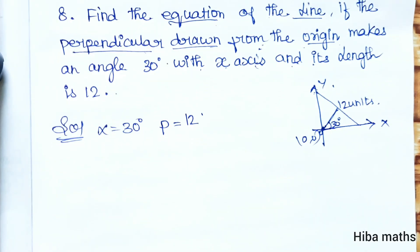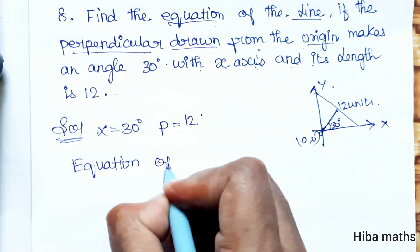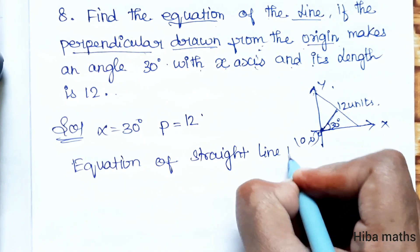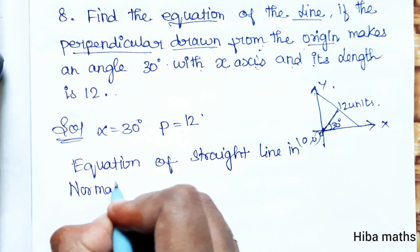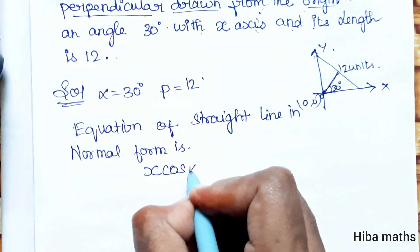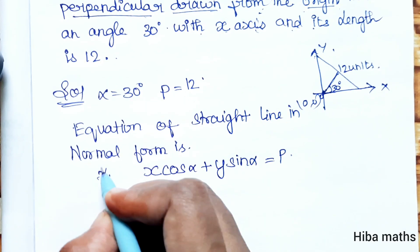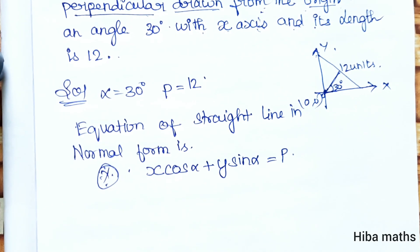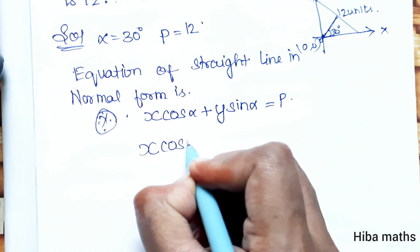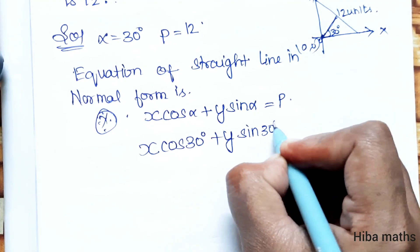Now, the equation of a straight line in normal form — that is the perpendicular formula — is: x·cos α + y·sin α = p. Here, alpha is 30 degrees, so we write x·cos 30° + y·sin 30° = p, where p is the length of the perpendicular.